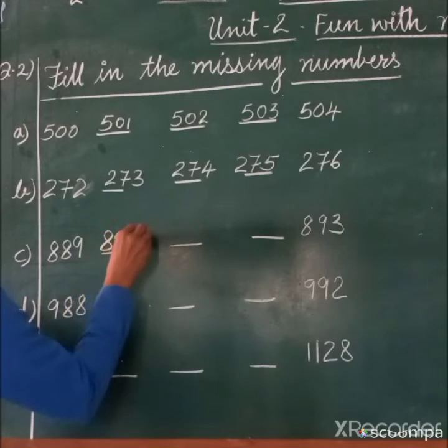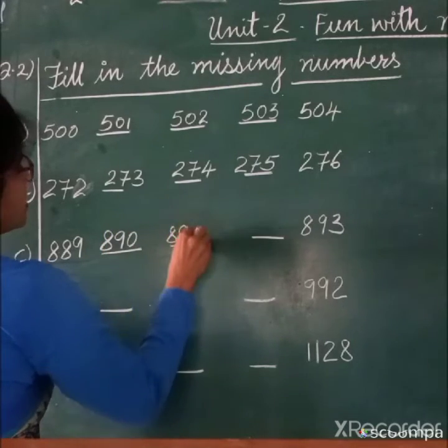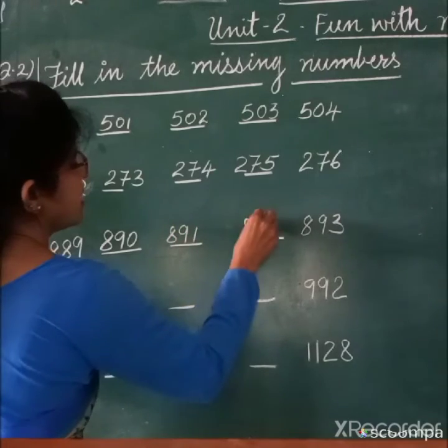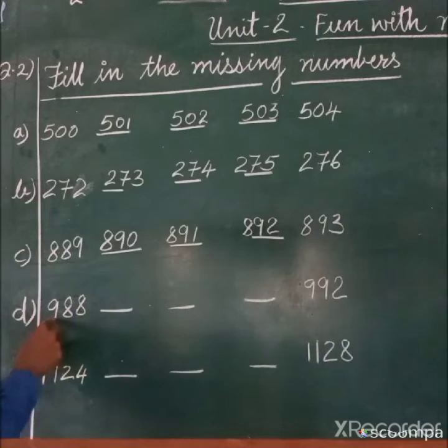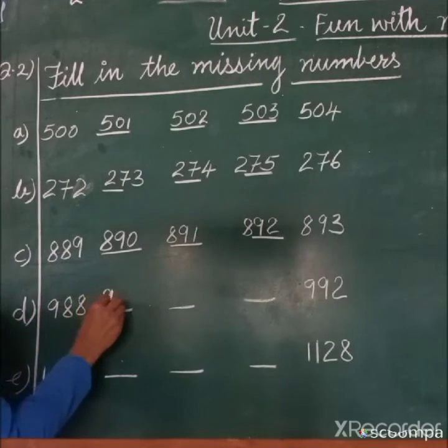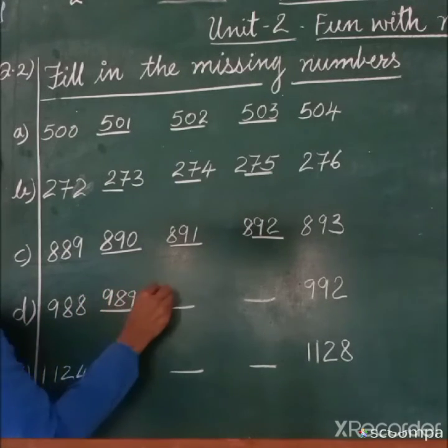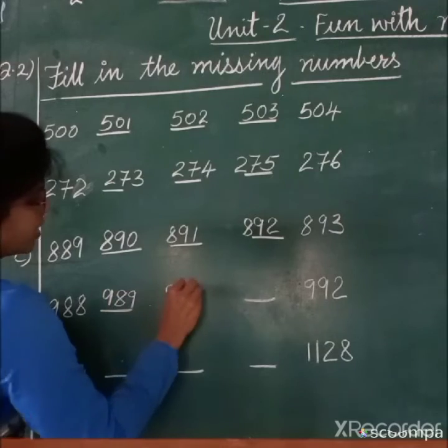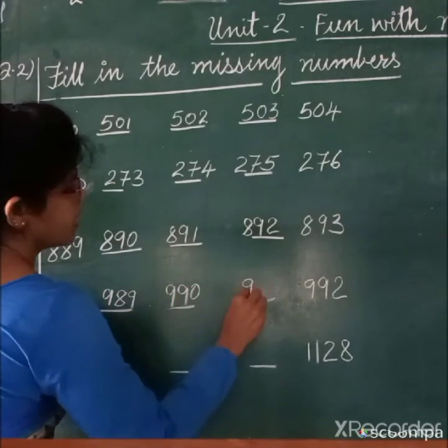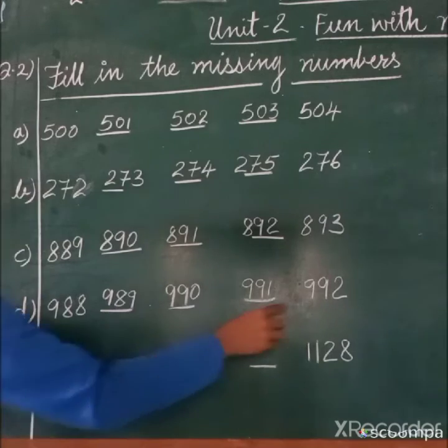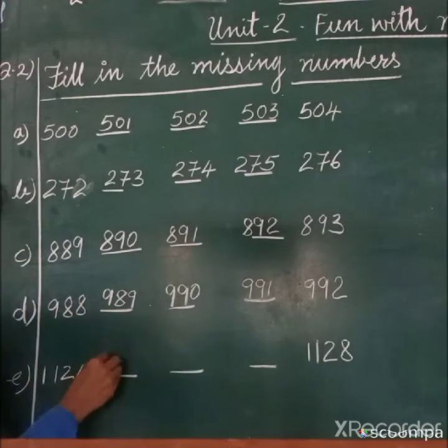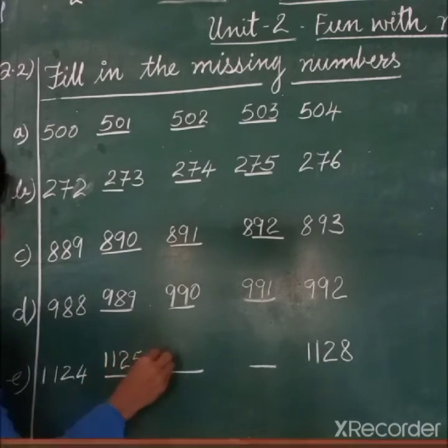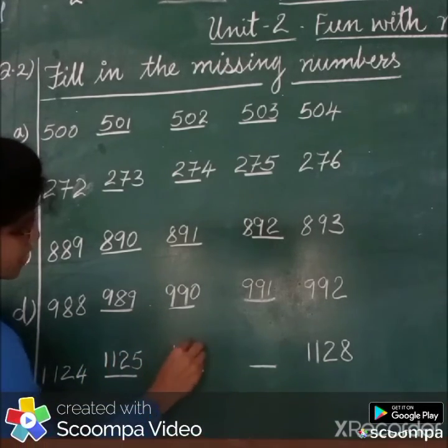Here 889, 890, 891, 892. 988, 989, 990, 991, 992. Here 1124, 1125, 1126, 1127, 1128.